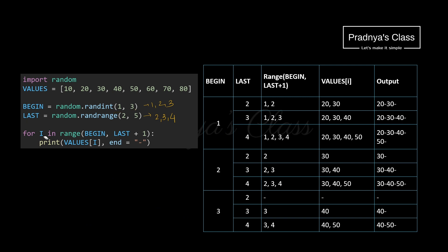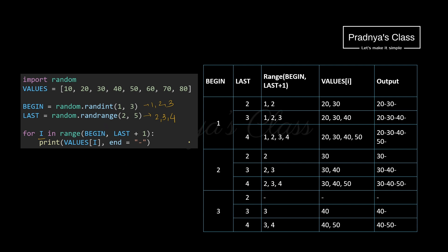Now let's proceed. I is iterating from 'beginning' to 'last', but the end limit is exclusive, so it will generate up to last minus 1. Let's check out exactly what we are printing — based on the value of I, we are printing the elements of the list, and the end parameter is a dash. There are two variables, so we need to do the permutations and combinations. The value of beginning is 1, 2, 3 and the value of last is 2, 3, 4.